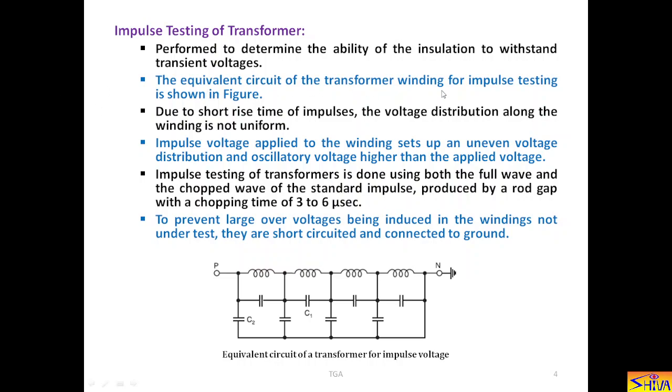The equivalent circuit of the transformer winding for impulse testing is shown in the figure. This is the electrical equivalent circuit. Due to short rise time of the impulses, the voltage distribution along the winding is not uniform. This is because the d by dt is very high. Therefore, the voltage distribution in the winding is not uniform.